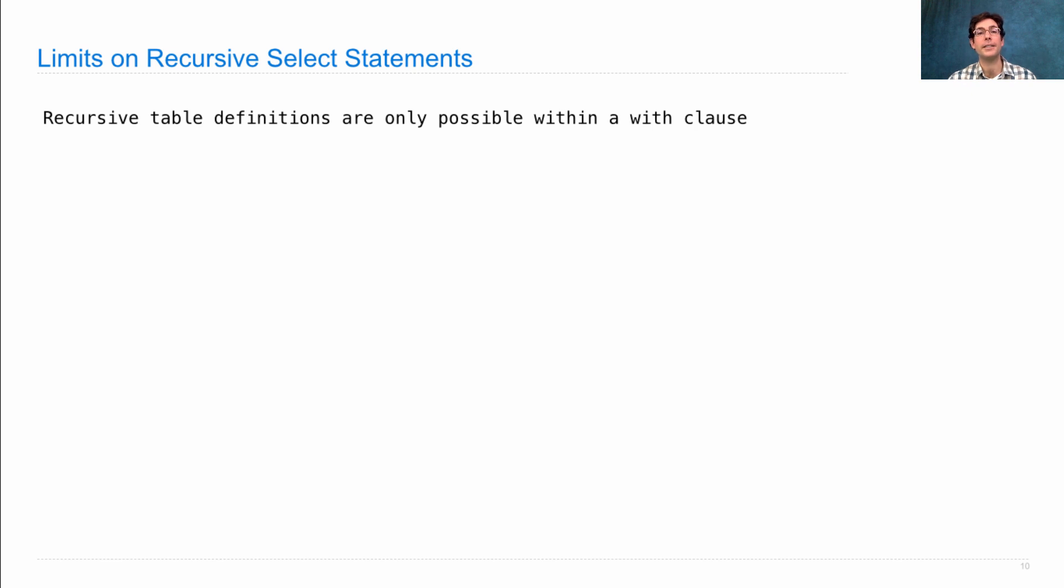Recursive table definitions are only possible within a with clause. You're not allowed to use mutual recursion. Now, some database systems may vary on these requirements. But we're going to give the requirements that are imposed by SQLite, since that's the system that we're using in order to run our experiments.